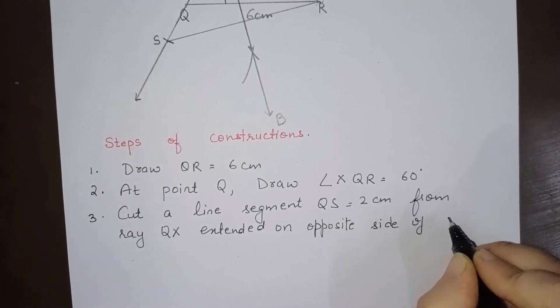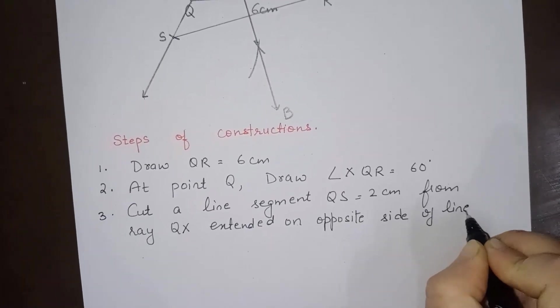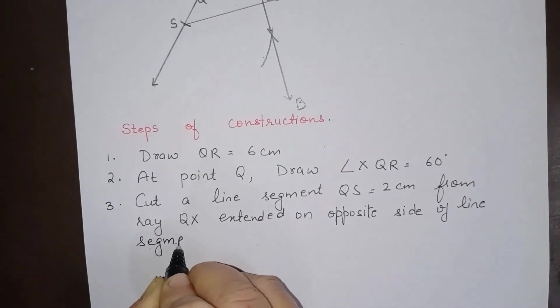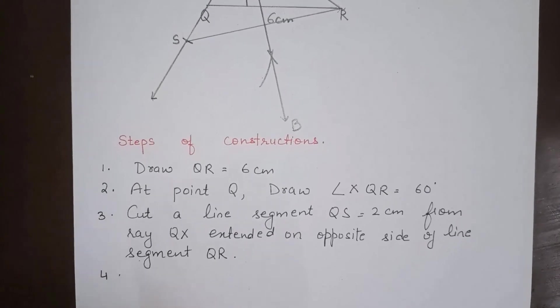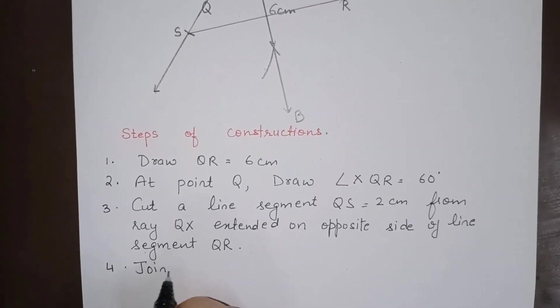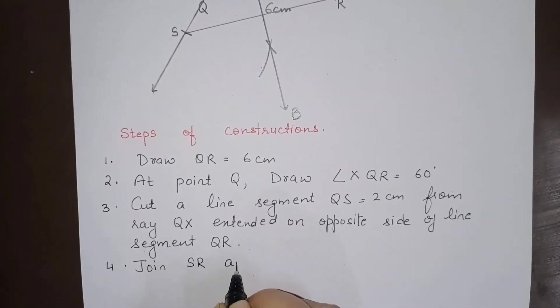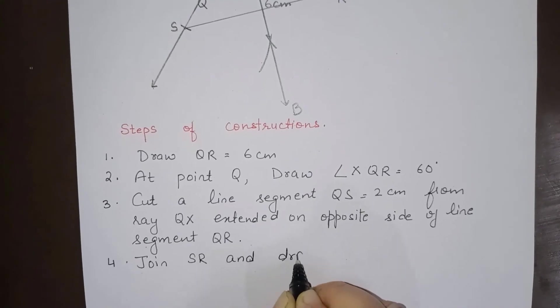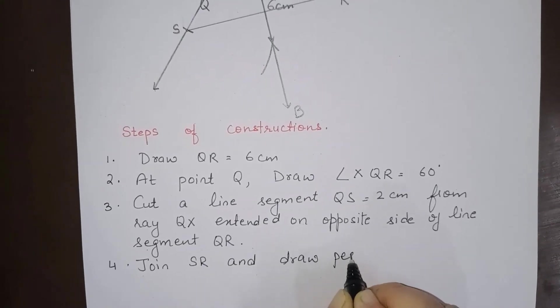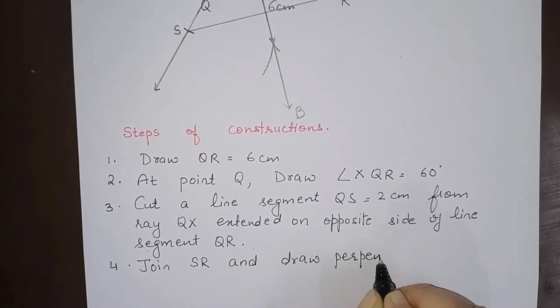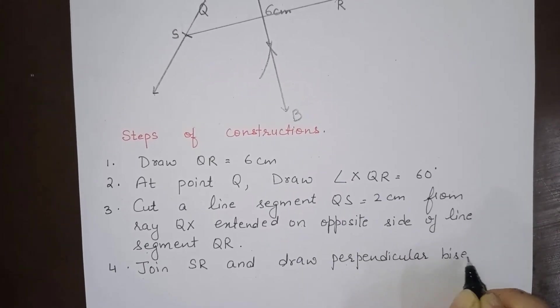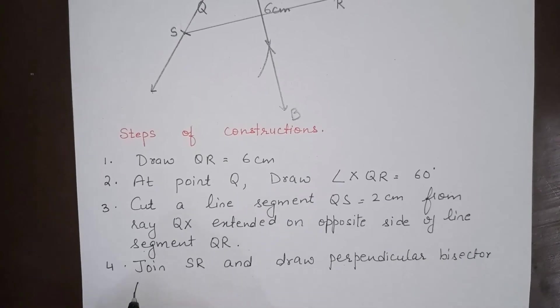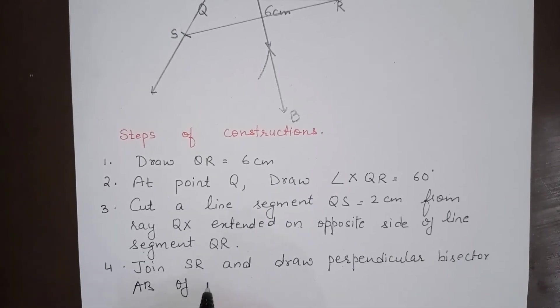Fourth: Join SR and draw the perpendicular bisector AB of SR.